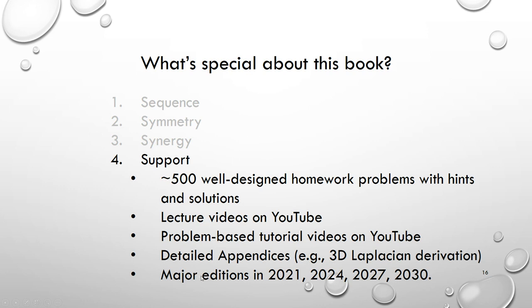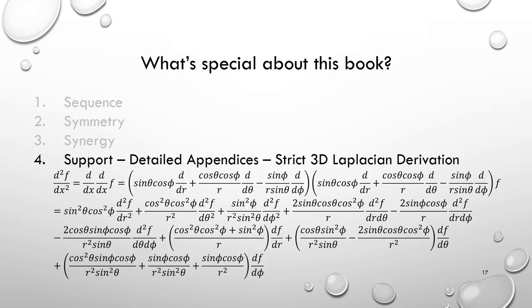We'll have four major editions. I got edition 1.0 back in 2021. I plan to roll out edition two, three, and four in 2024, 27, and 30. I think out of 30, I will try to write an open access, editable, and multimedia-aided general chemistry textbook. Over here, one example of the detailed appendix on strict three-dimensional Laplacian derivation from the Cartesian coordinates to the polar coordinates.